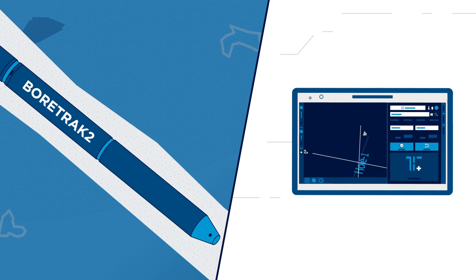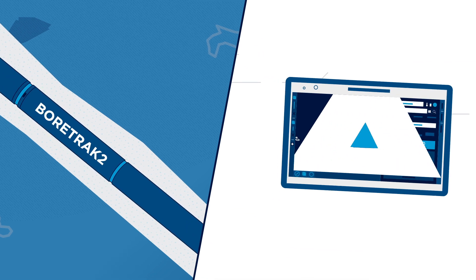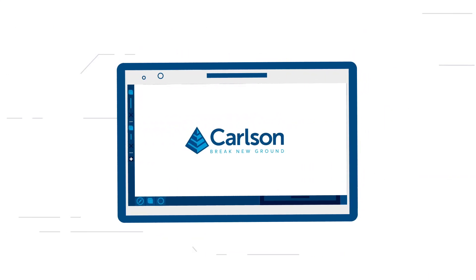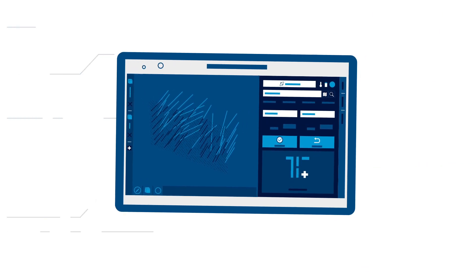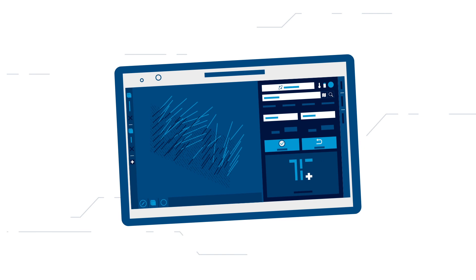The BoreTrack 2 takes readings at user-supplied intervals as it travels through the borehole. The easy-to-use Carlson scan software allows for rapid data collection and visualization of results. The results can then be exported to other programs via standard industry-filed formats.